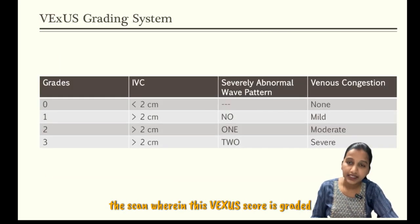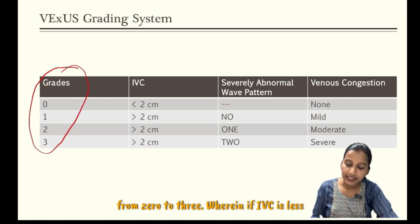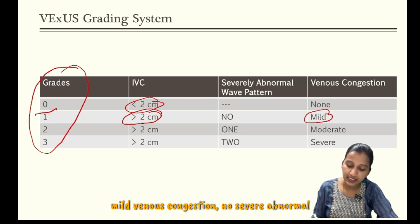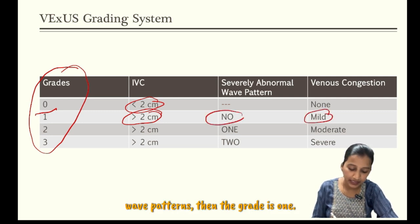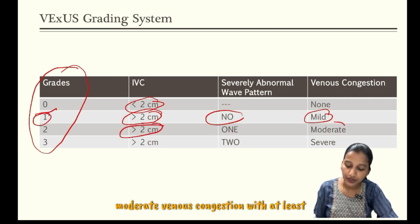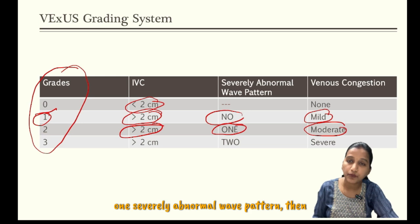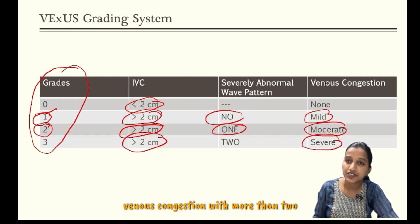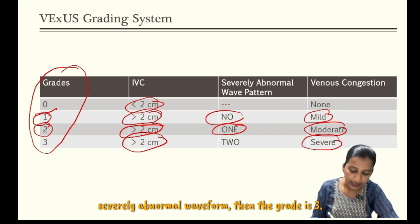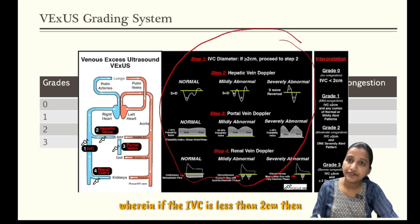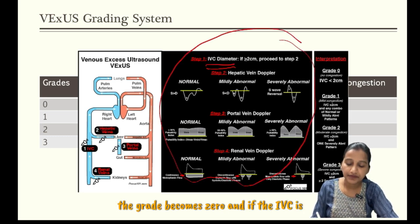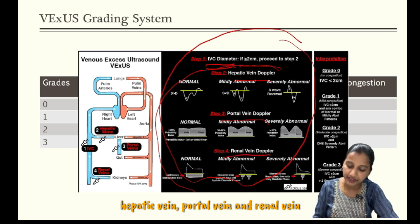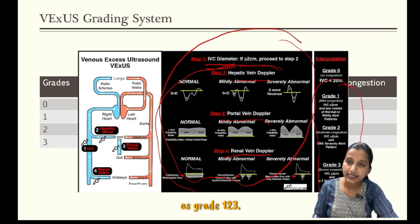So how do we interpret the results of the scan? The VEXUS score is graded from 0 to 3. If IVC is less than 2 cm, the grade is 0. If the IVC is more than 2 cm with mild venous congestion and no severe abnormal wave patterns, the grade is 1. If the IVC is more than 2 cm with moderate venous congestion and at least one severely abnormal wave pattern, the grade is 2. If the IVC is more than 2 cm with severe venous congestion and more than 2 severely abnormal waveforms, the grade is 3. If the IVC is less than 2 cm the grade is 0; if more than 2 cm we proceed with assessment of hepatic vein, portal vein, and renal vein, and grade accordingly as 1, 2, or 3.